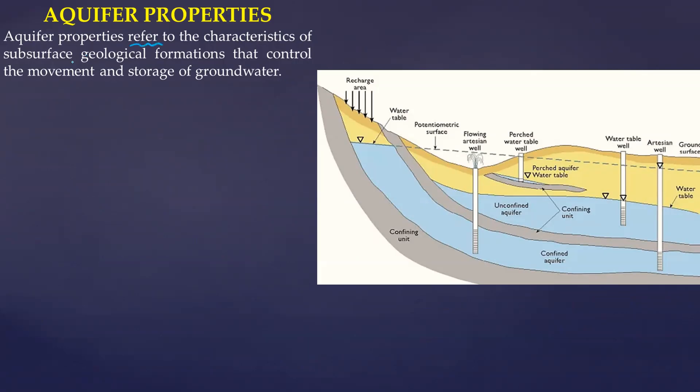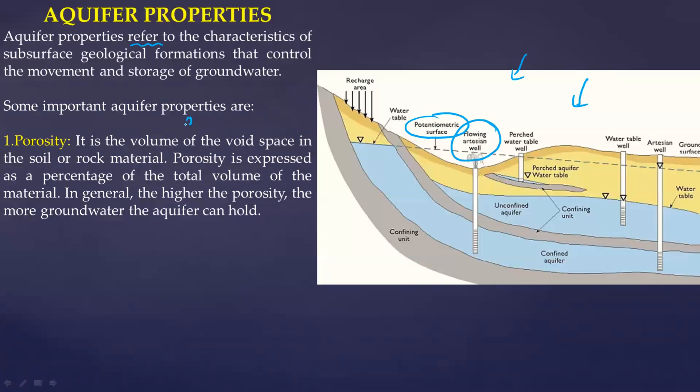Let's look into the aquifer properties based on Darcy's law. As you can see here in the diagram itself, there are certain terminologies which in the beginning of this entire series we talked about. There is flowing artesian well, there is something called potentiometric surface. If you have not watched the earlier videos, the introduction to hydrology, you should visit there. Now look into the important aquifer properties. The first is porosity itself. Porosity is expressed as a percentage of total volume of the material in terms of void and spaces. In general, high porosity means more groundwater. It's basically how much groundwater is confined in that.